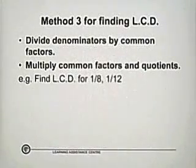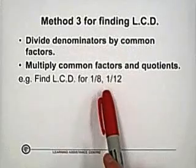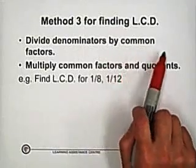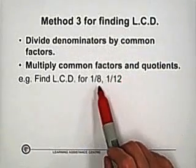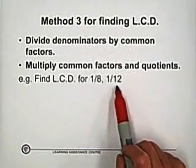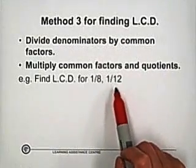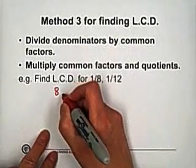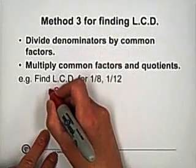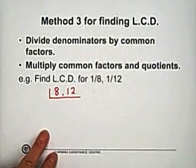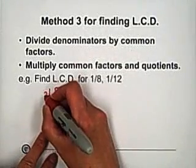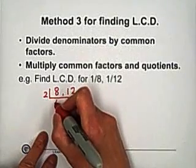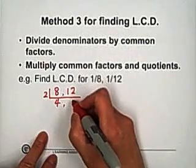Find the least common denominator for 1 over 8 and 1 over 12. Following the rule, divide denominators by common factors. We check 8 and 12 — they are both even numbers. So divide 8 and 12 by the common factor 2: 8 divided by 2 equals 4, and 12 divided by 2 equals 6.